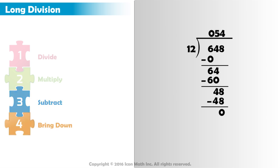There's nothing left to bring down. Yay! We're done! The quotient of 648 divided by 12 is 54.